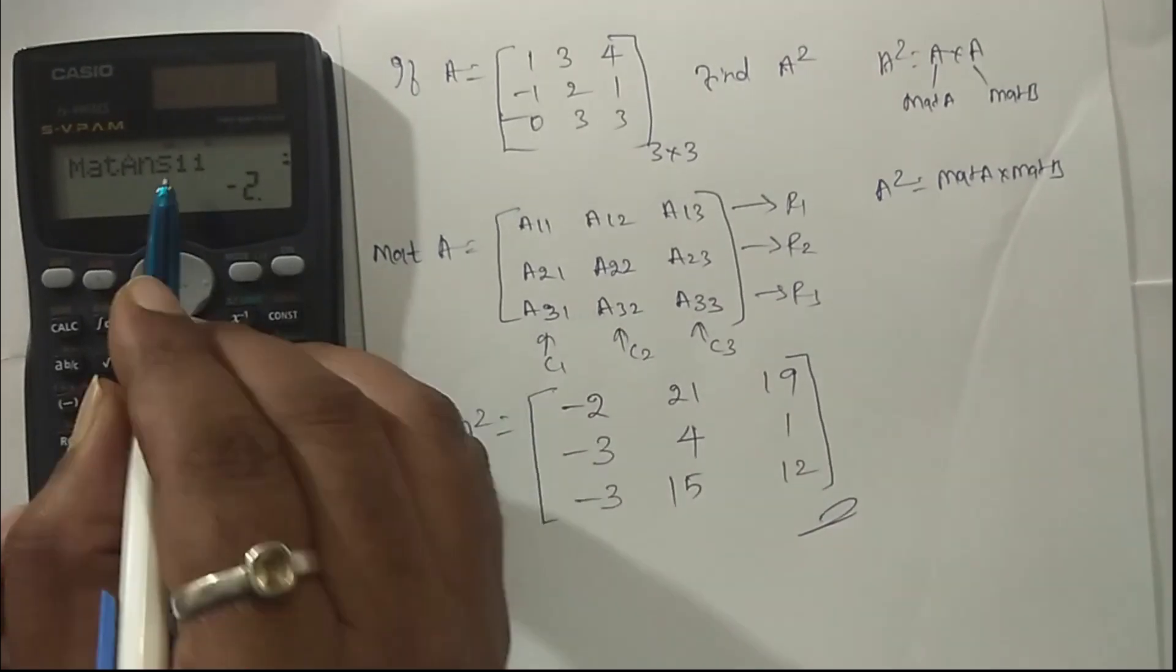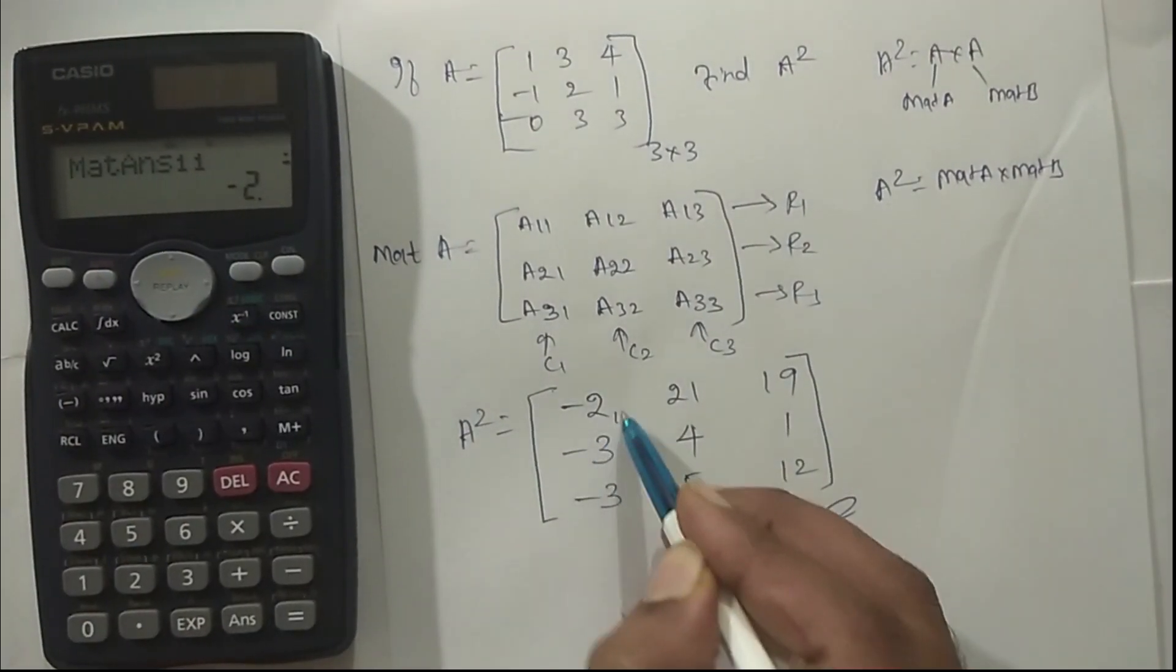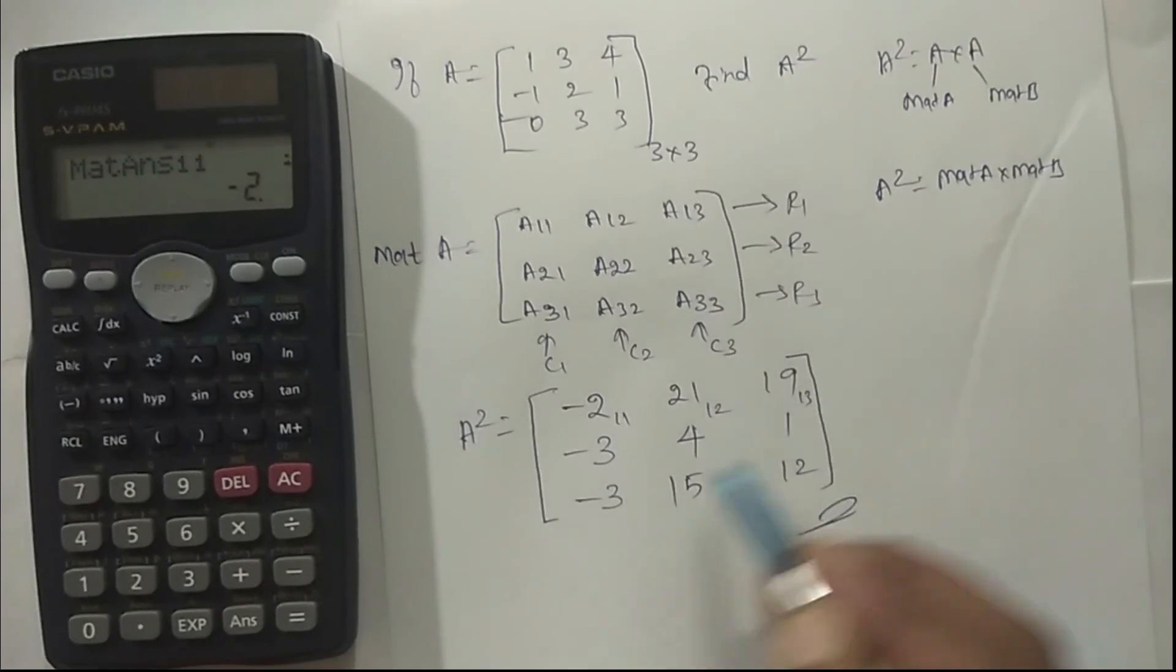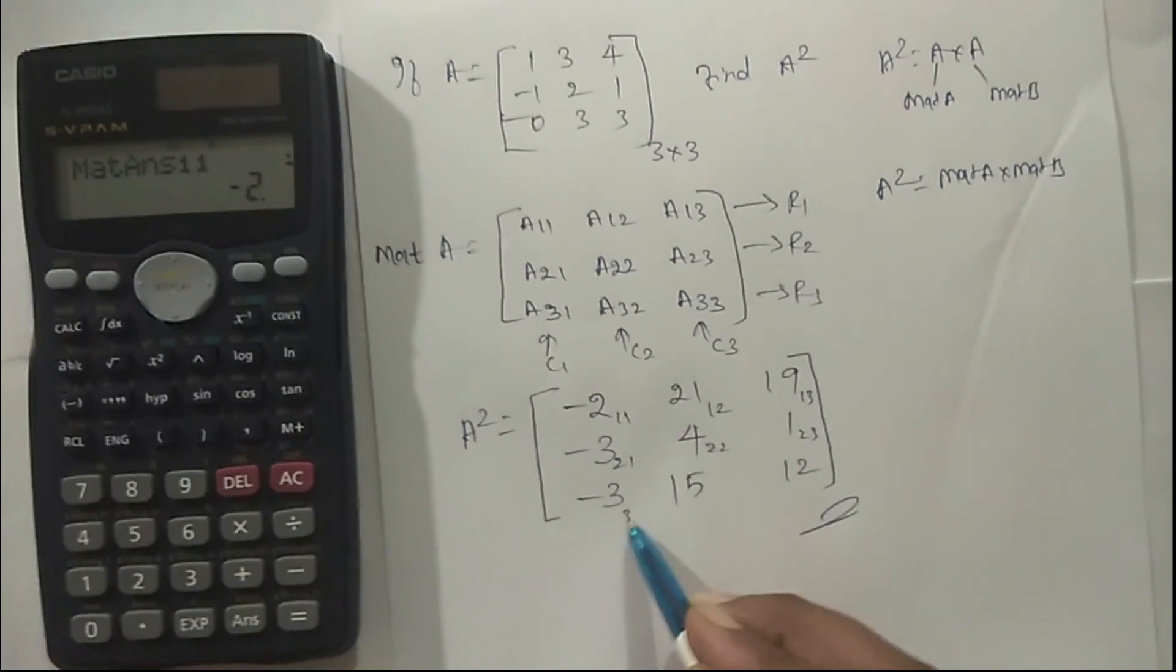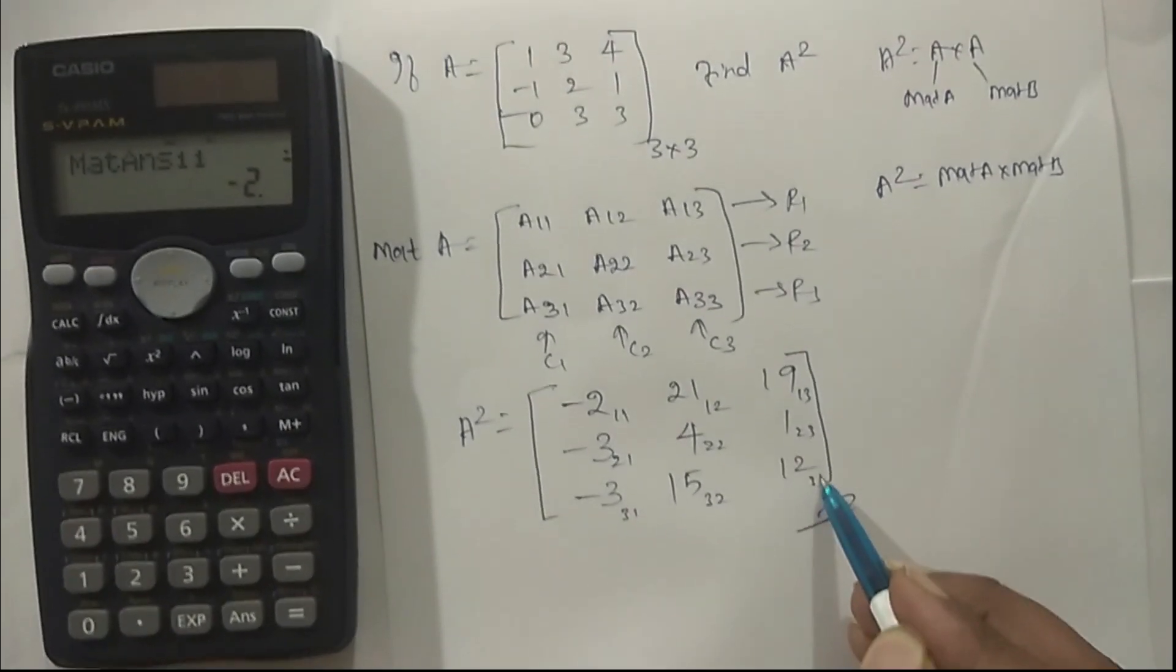See here, the matrix answer. This is A11, A12, A13, and A21, A22, A23, and A31, A32, A33. Just check it. Now A11 is minus 2. Just scroll it. Okay.